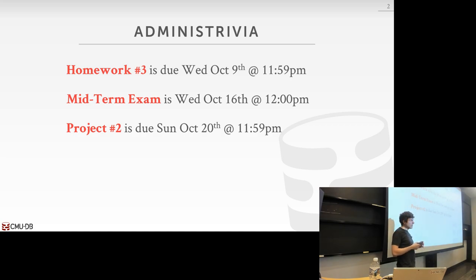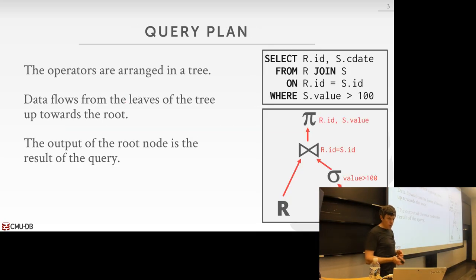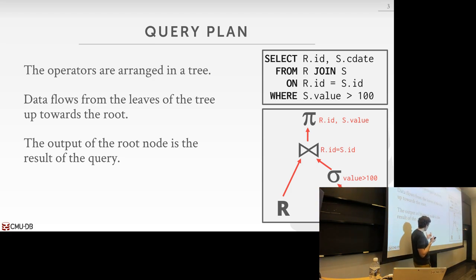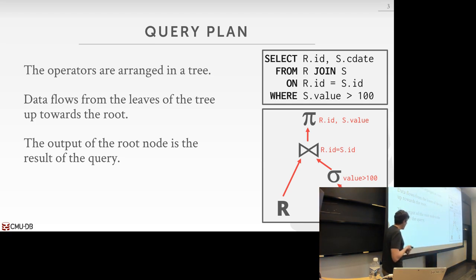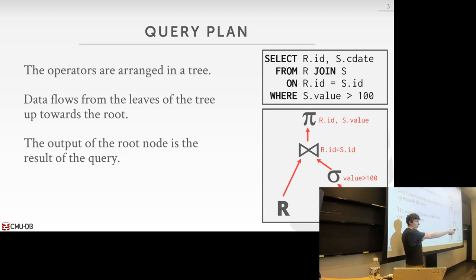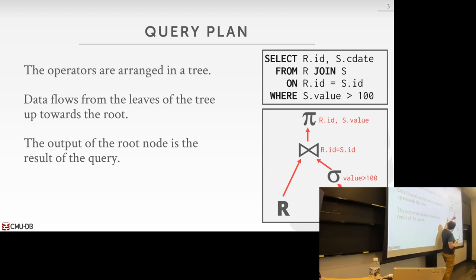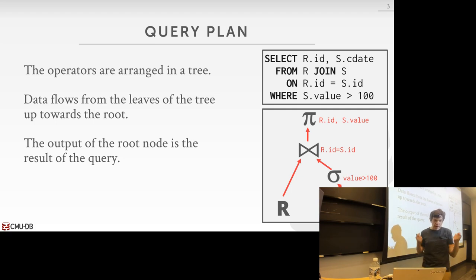We've been talking about query execution, mostly focusing on how to implement the operators in our query plan — how to do sorting, hash joins, and so forth. Today we're going to start putting this all together: how do we execute an end-to-end query and produce a final result to the application? These are all the operators in our query plan, and we know how to do sort-merge join, hash join, nested loop join, sorting, and aggregations.